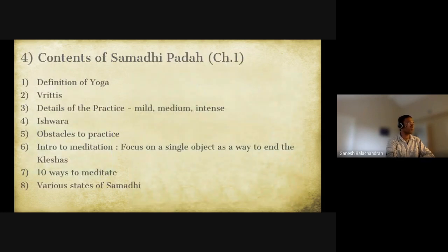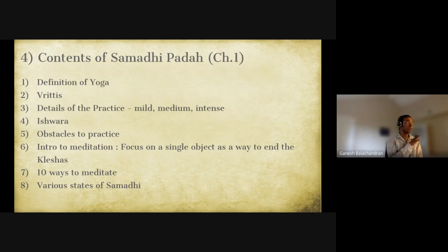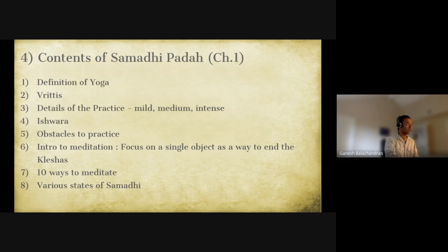The contents of the Samadhi Pada are as follows: Patanjali first defines yoga, then talks about the vrittis of the mind — vritti carries a connotation of turbulence. He gives details on mild, medium, and intense practice, then talks about the concept of ishwara in about seven sutras. He discusses obstacles to practice — vyadhi, tyana, samshaya and others — and says the best way to remove these obstacles is meditation. He introduces focus on a single object as the best way to end these kleshas and describes ten ways to meditate, then goes into various states of samadhi.